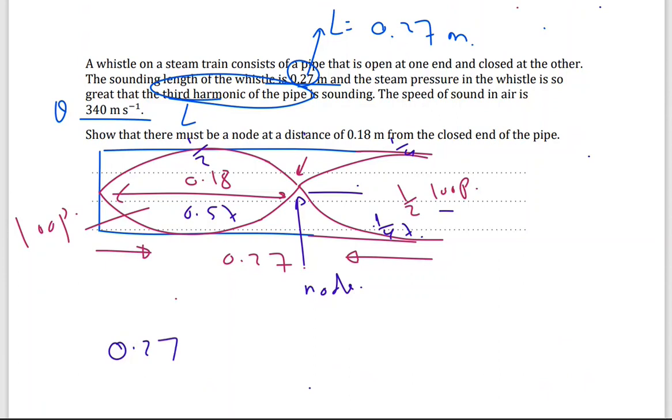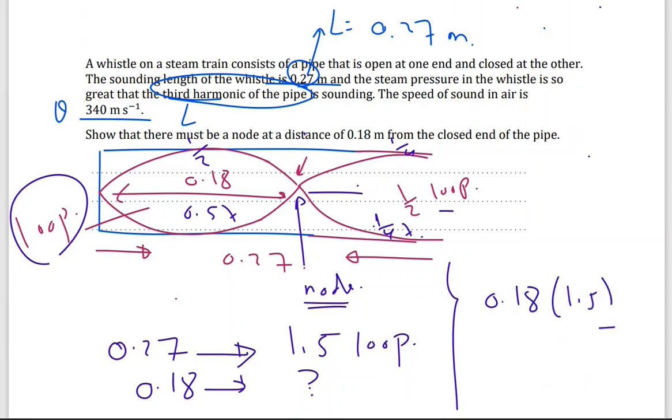Now, the other way of solving this question is. The length, the total length is 0.27, and this corresponds to one and a half loop. 1, this is the first loop, and this is half loop, so one and a half. 0.18 correspond to how many loops? I should have one loop. So I need to verify that it is one loop. If it's one loop, so that means this point is not. So the same thing, I'm going to do cross multiplication. So 0.18 times 1.5 divided by 0.27, this will give me the number, the question mark, the number of loops, and I should get one.